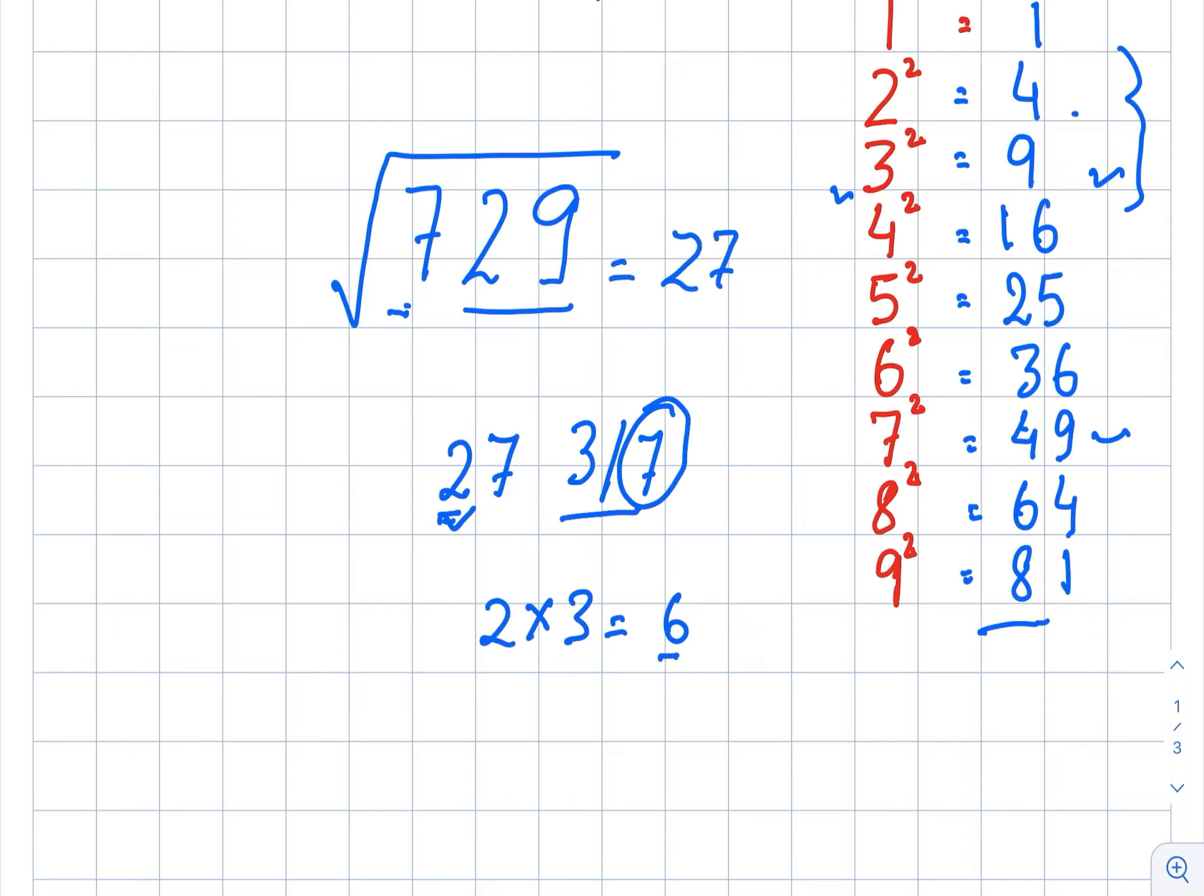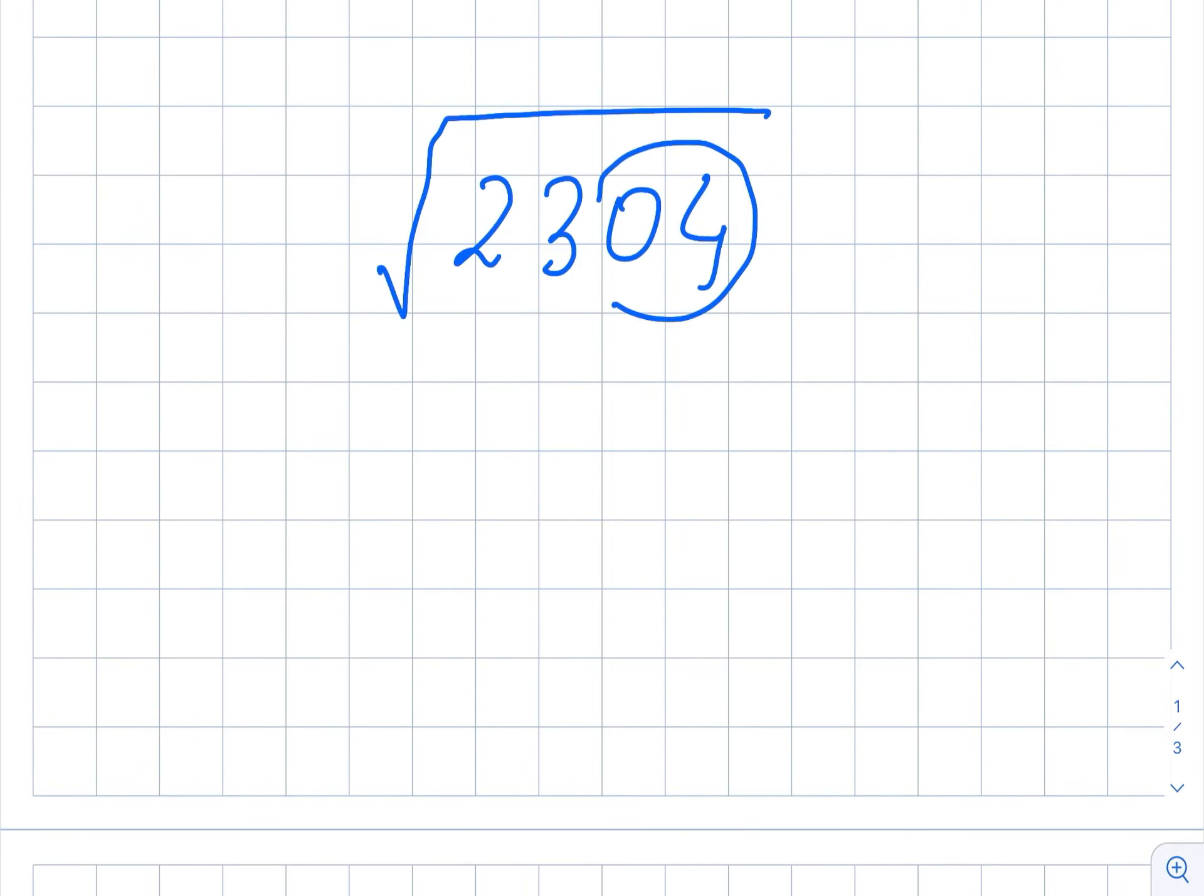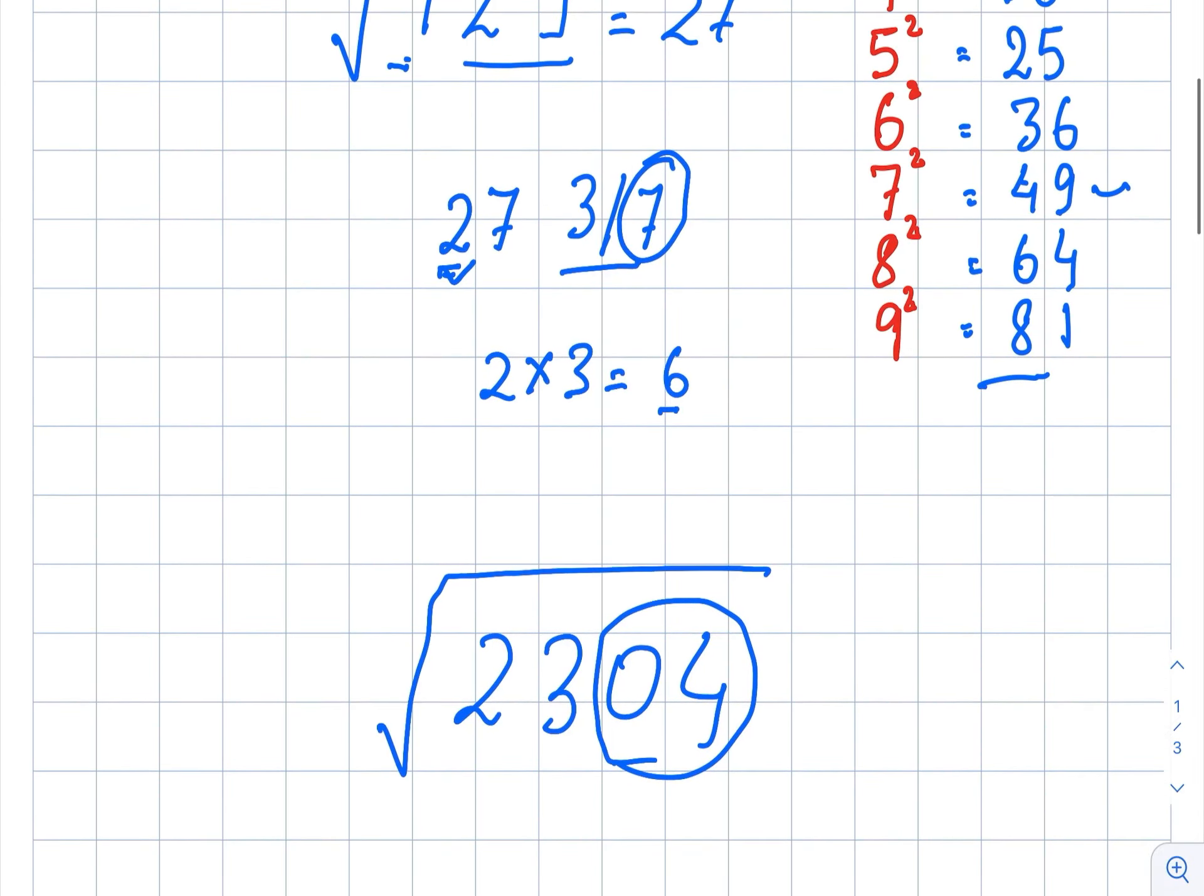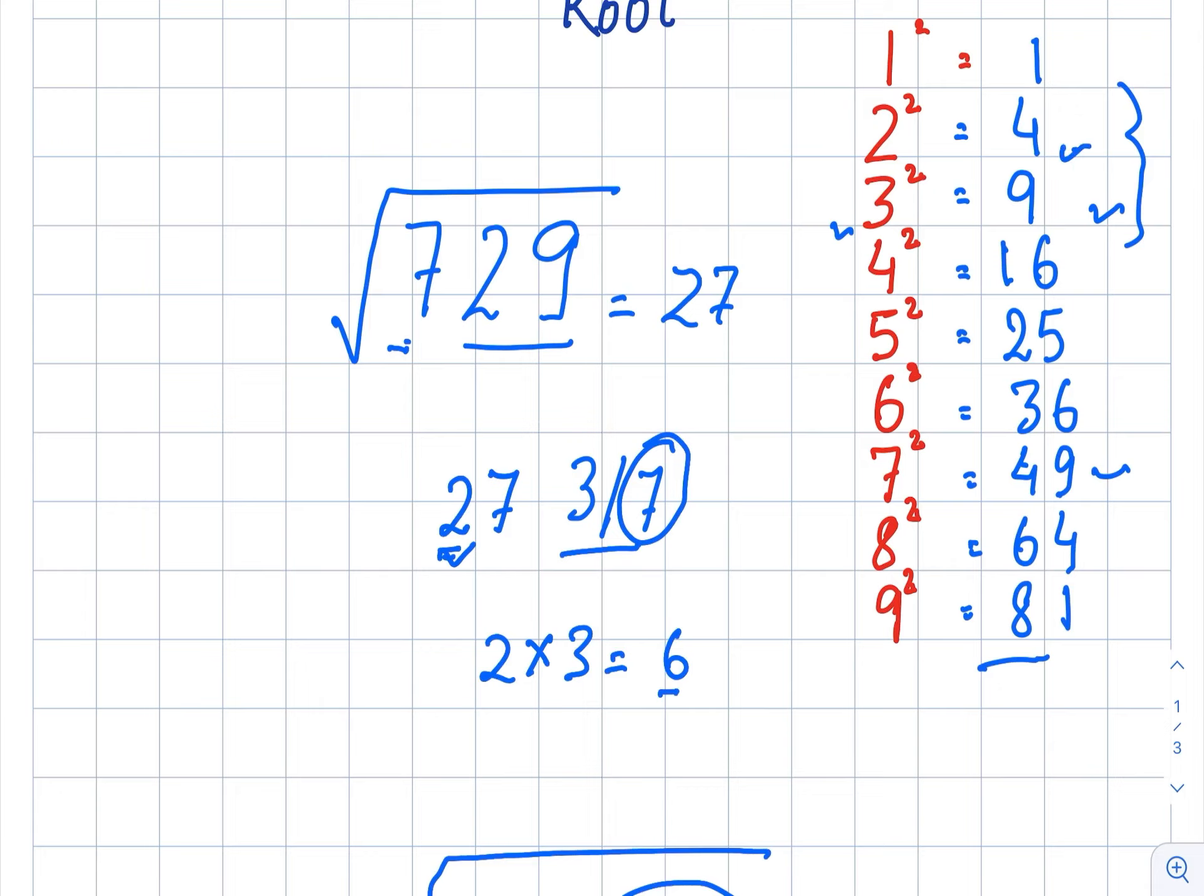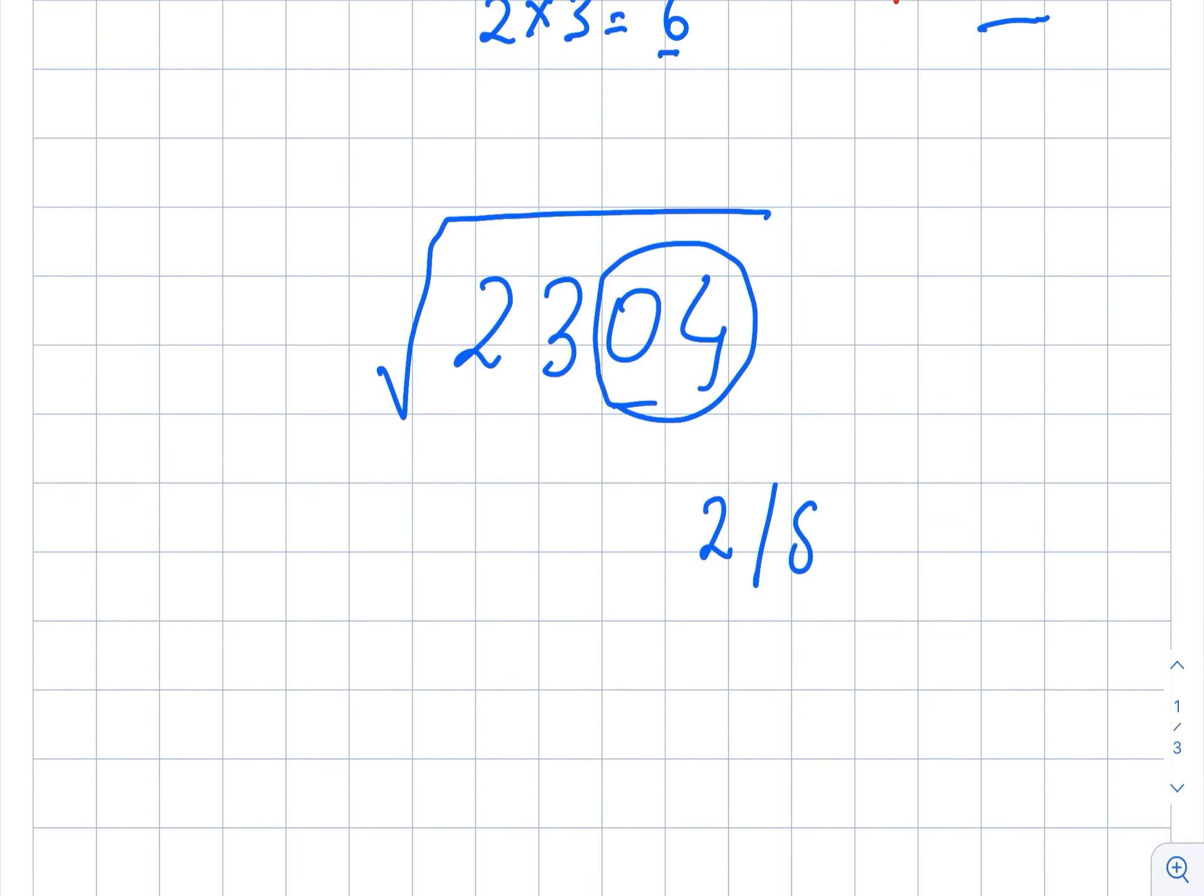Take another example if you want to prove this theory again. We will take the last two digits, 04. Now in this table, two numbers, 4 and 64, have 4 at the end, which means square root of 2 and 8. So just write 2 or 8. Now for this 23, either the square of 4, which is 16, or square of 5, which is 25.